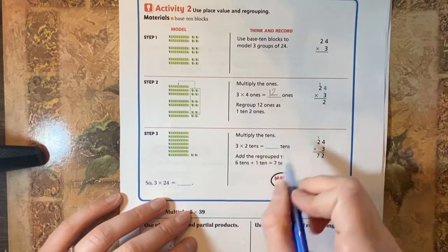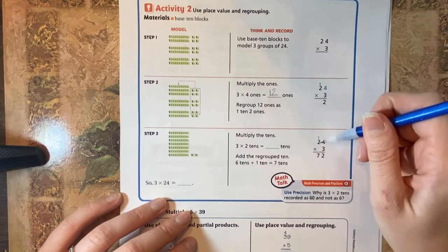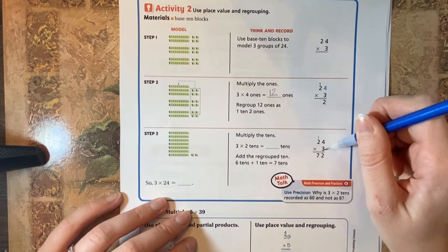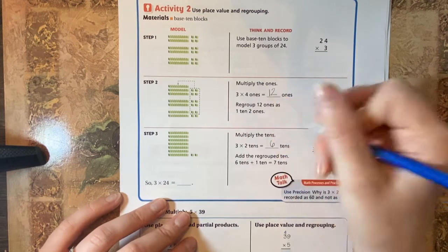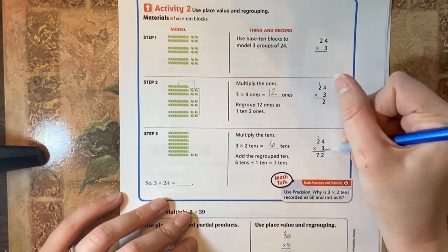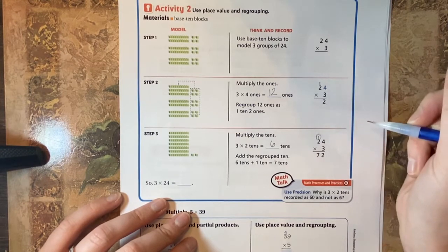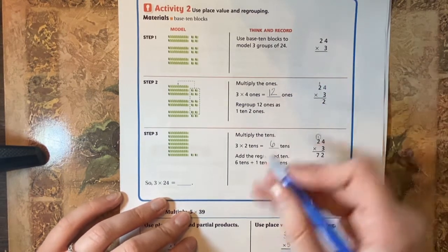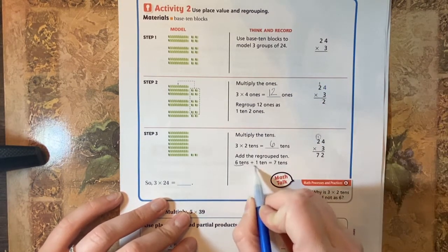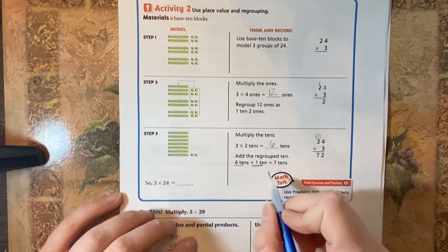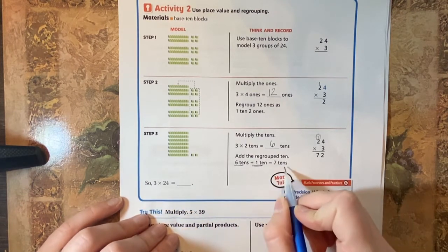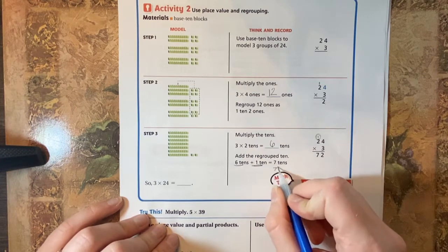Then we multiply the tens. So we do two times three, which is six tens. But then we have that one up here that represents one 10 from our 12. So we just take that 10 and we add it to the six tens and we have now seven tens, which is equal to 70.